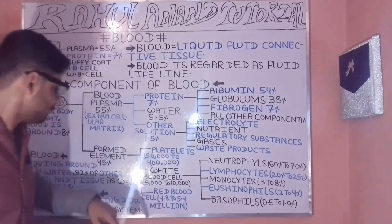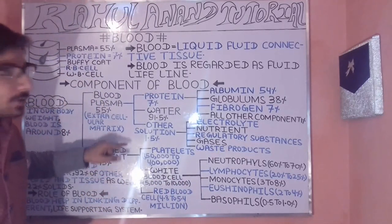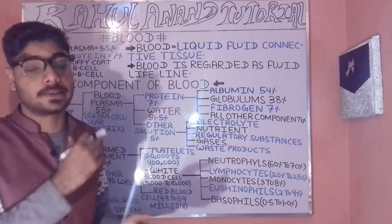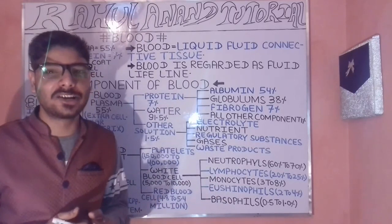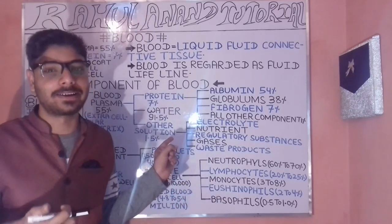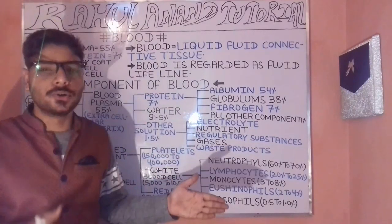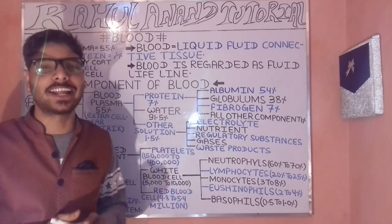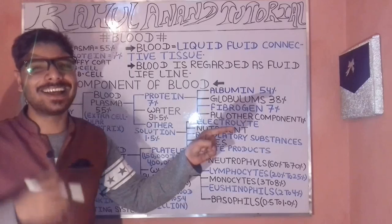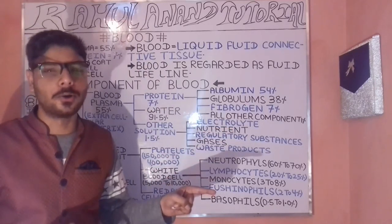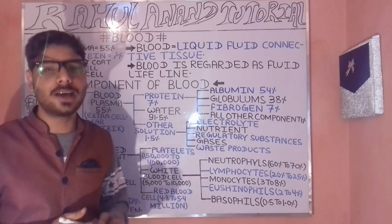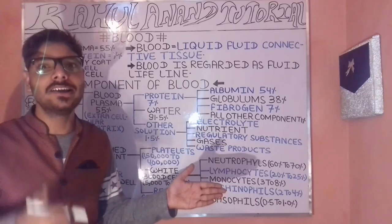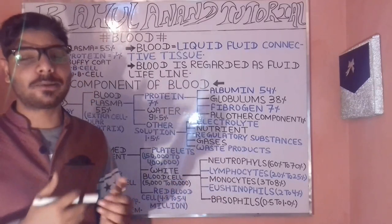Plasma is around 55 percent and is known as the extracellular matrix. Plasma is further divided into three categories: proteins (around 7 percent), water, and other solutions.